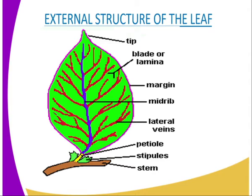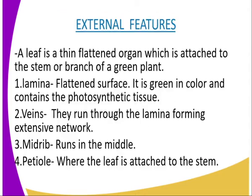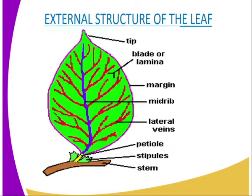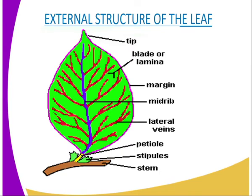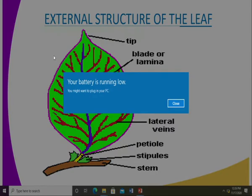The lamina contains the guard cells where photosynthesis takes place. We also have the veins, which run through the lamina forming an extensive network — as you can see the lateral veins in our diagram. We also have the midrib, which runs through the middle at the center of the leaf, and is conjoined by the veins.